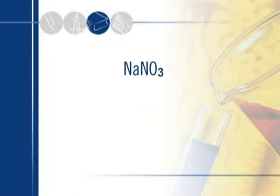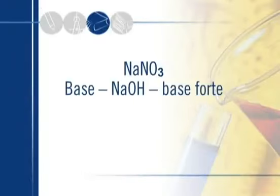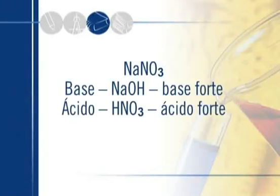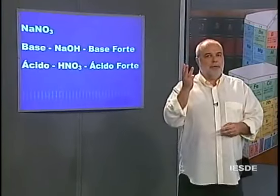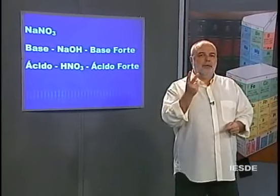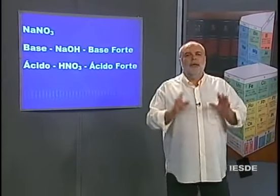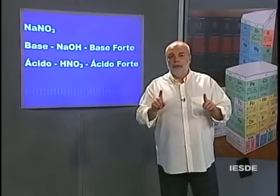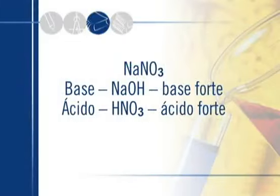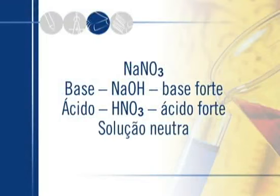Segundo sal: NaNO₃, nitrato de sódio. Base de origem: NaOH, que é uma base forte, base alcalina. Ácido de origem: HNO₃, ácido nítrico. Por quê é forte? HNO₃ tem 3 oxigênios e 1 hidrogênio, N igual a 2, portanto é ácido forte. Base forte e ácido forte — não há hidrólise. A solução é equivalente a água pura, meio absolutamente neutro, pH 7.